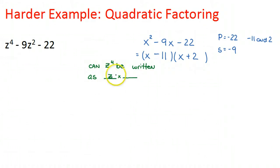So z squared times z squared, sure enough, is z to the fourth. So therefore, what that means is this question is exactly the same, but the only difference is that instead of x here, I put z squared minus 11, and then z squared plus 2.